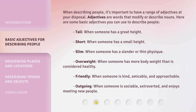When describing people, it's important to have a range of adjectives at your disposal. Adjectives are words that modify or describe nouns. Here are some basic adjectives you can use to describe people. Tall — when someone has a great height. Short — when someone has a small height. Slim — when someone has a slender or thin physique. Overweight — when someone has more body weight than is considered healthy. Friendly — when someone is kind, amicable, and approachable.